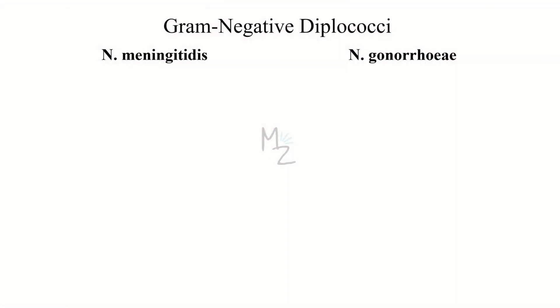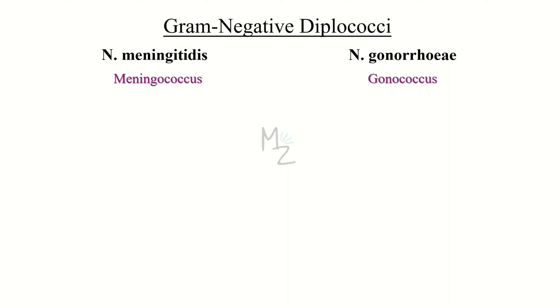Neisseria meningitis and Neisseria gonorrhea, both are gram-negative diplococci. Neisseria meningitis is also called meningococcus, while Neisseria gonorrhea is called gonococcus.